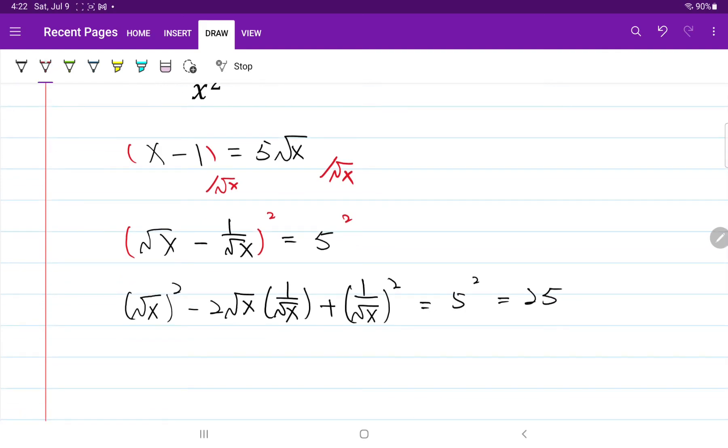If you pay attention, you'll notice that these two cancel out each other. And so when we simplify the whole thing, we have x minus 2 plus 1 over x is equal to 25.